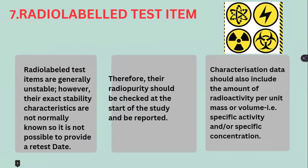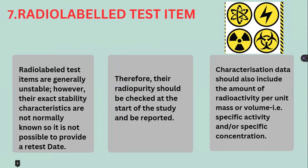Radiolabeled test items are generally radioisotopes or isotopes and are generally unstable materials. Their exact stability characteristics are not normally known, so it is not possible to provide a retest date. Therefore, their radiopurity should be checked at the start of the study and be reported. Characterization data should include the amount of radioactivity per unit mass or volume — for example, the specific activity or specific concentration of the radiolabeled test item.